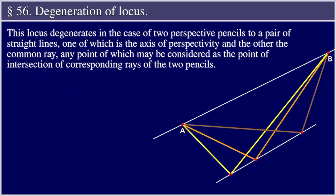Section 56, Degeneration of Locus. This locus degenerates, in the case of two perspective pencils, to a pair of straight lines, one of which is the axis of perspectivity, and the other the common ray, any point of which may be considered as the point of intersection of corresponding rays of two pencils.